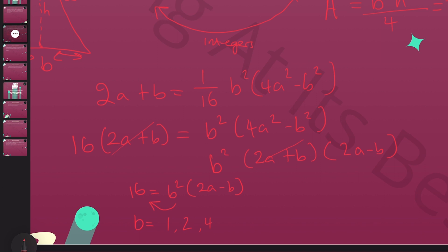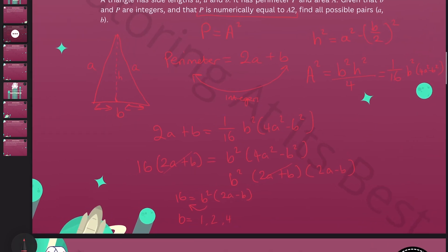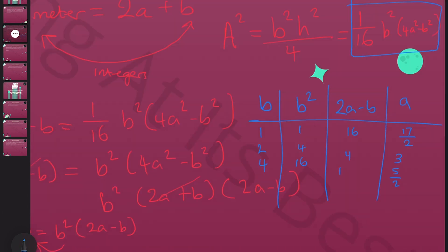What can we do here then? We know that B can either be 1, 2, or 4. Let's substitute these values in the following expressions. Let's take a different color. Remember, we have B, we have B², we have 2A minus B, and we have A. Remember that with this, B can either be 1, 2, or 4.